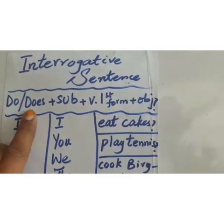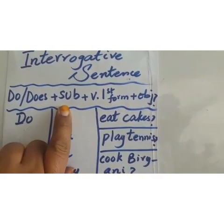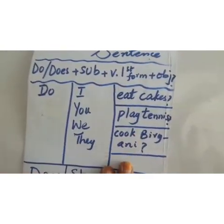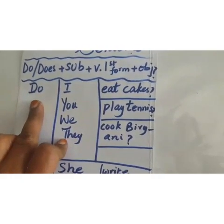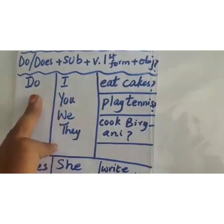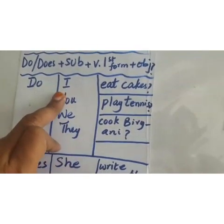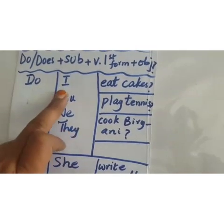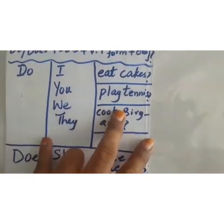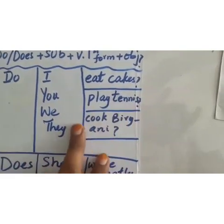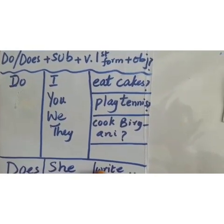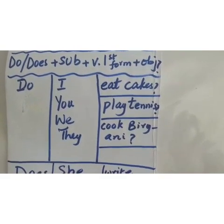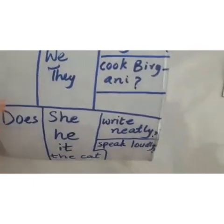In the interrogative form, 'do' or 'does' comes at the beginning, so it will be capitalized. Then the subject comes — the person who is doing an action — then verb in first form, then object, and at the end always remember the question mark. We use the helping verb 'do' with the subjects: I, you, we, they. For example: Do I eat cakes? Do you play tennis? Do we play tennis? Do they cook biryani? In this way you make an interrogative sentence using 'do.'